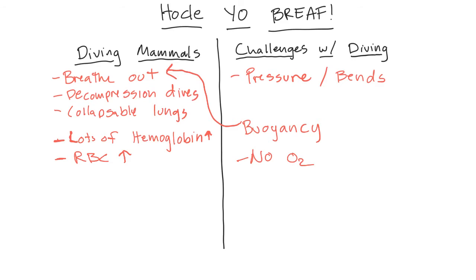If you're at high elevation, the air is thinner so there's less oxygen, and you compensate by making more red blood cells with more hemoglobin. There's also myoglobin — similar to hemoglobin — found in muscle tissue. Myoglobin takes oxygen from hemoglobin and stores it. Animals with lots of myoglobin have very dark red muscles — that's what the dark meat in turkey is. It has more myoglobin; the white meat has less.